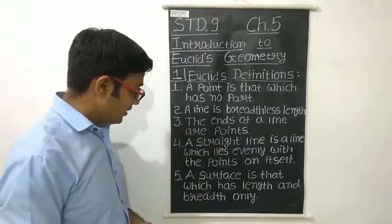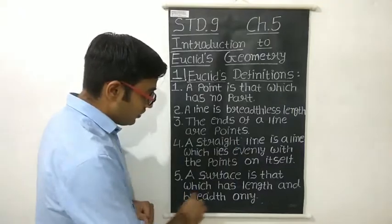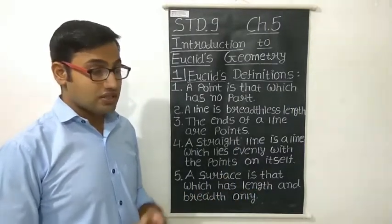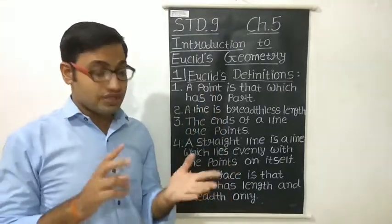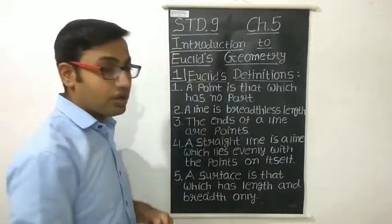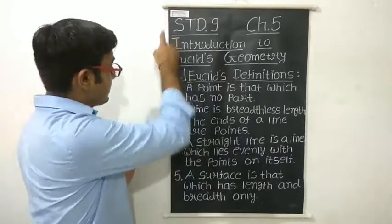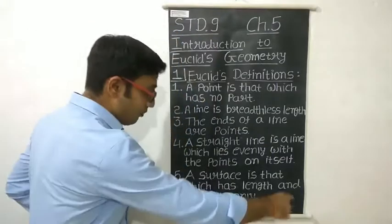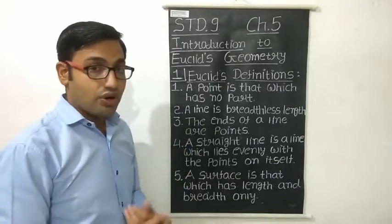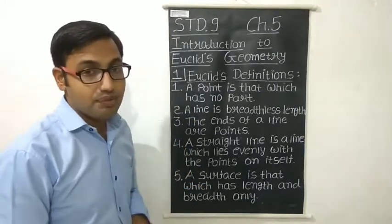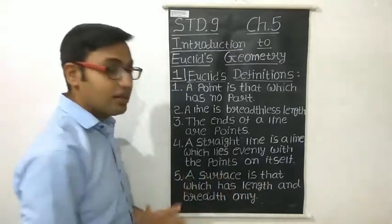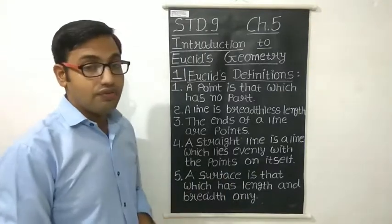The fifth definition: a surface is that which has length and breadth only. A surface is a two-dimension figure which has two dimensions — length and breadth. For example, a blackboard has length and breadth, so it is an example of a surface. Your textbook page is also an example of a surface.